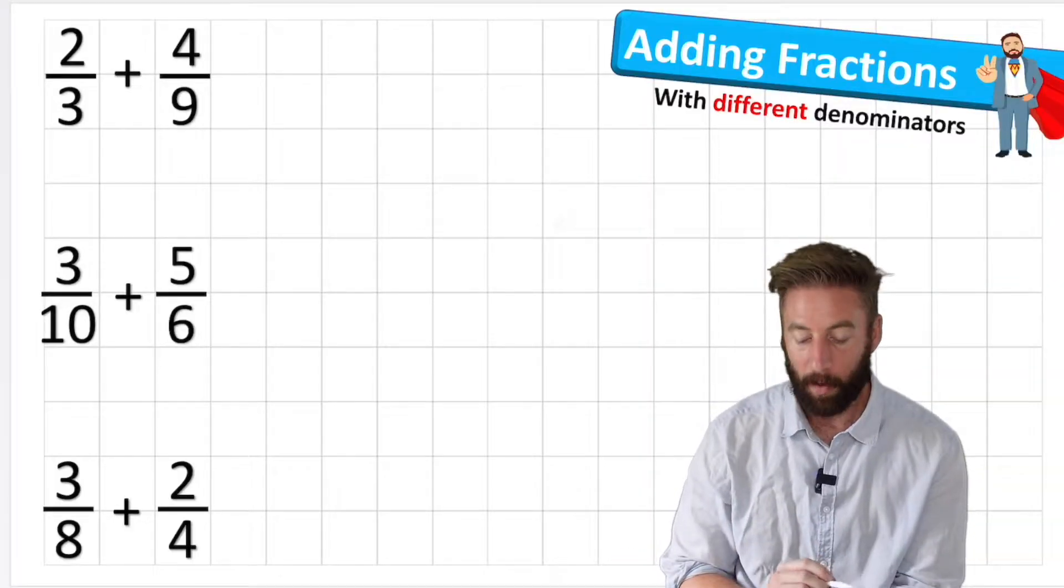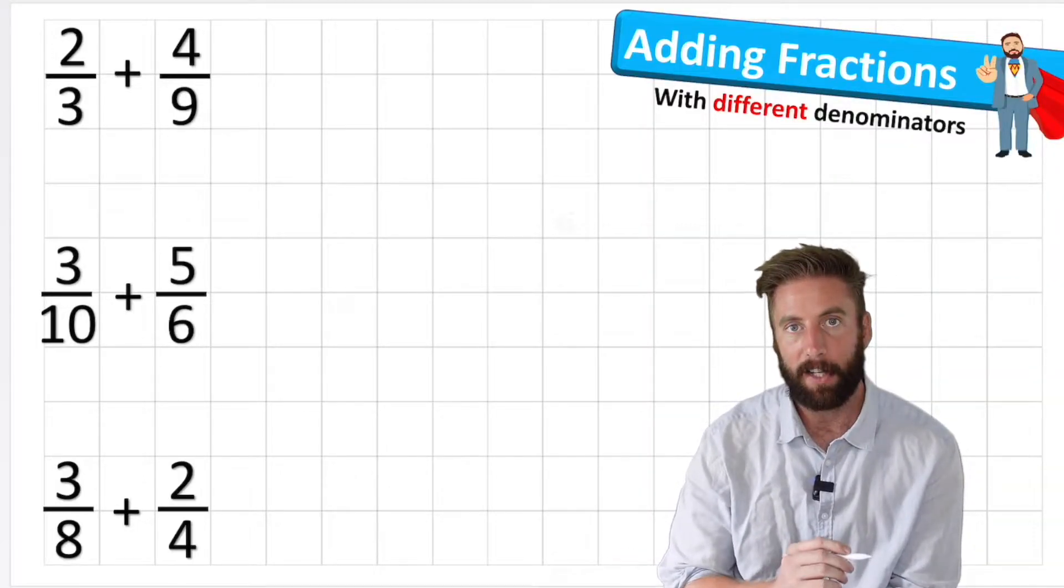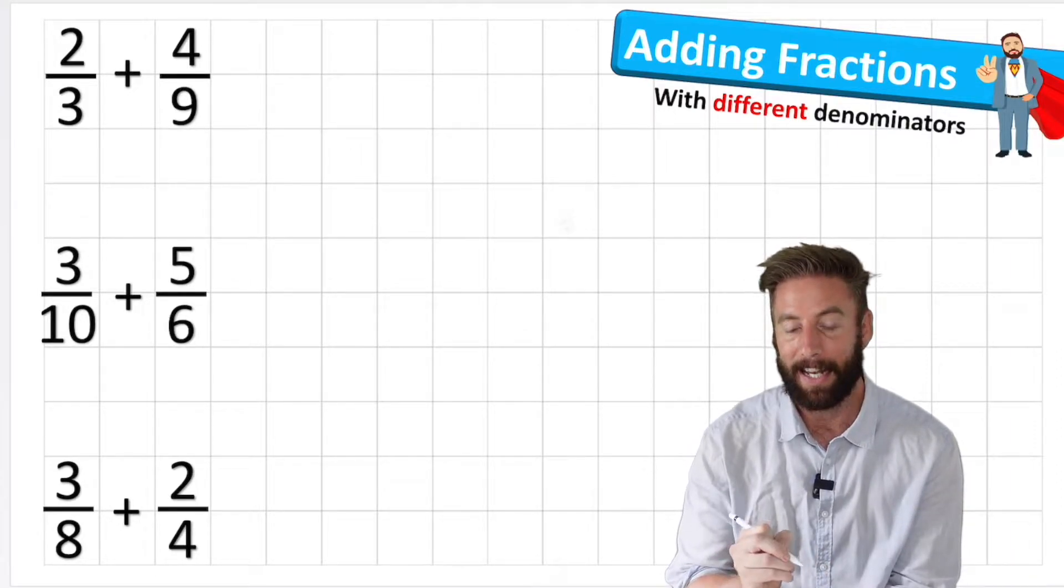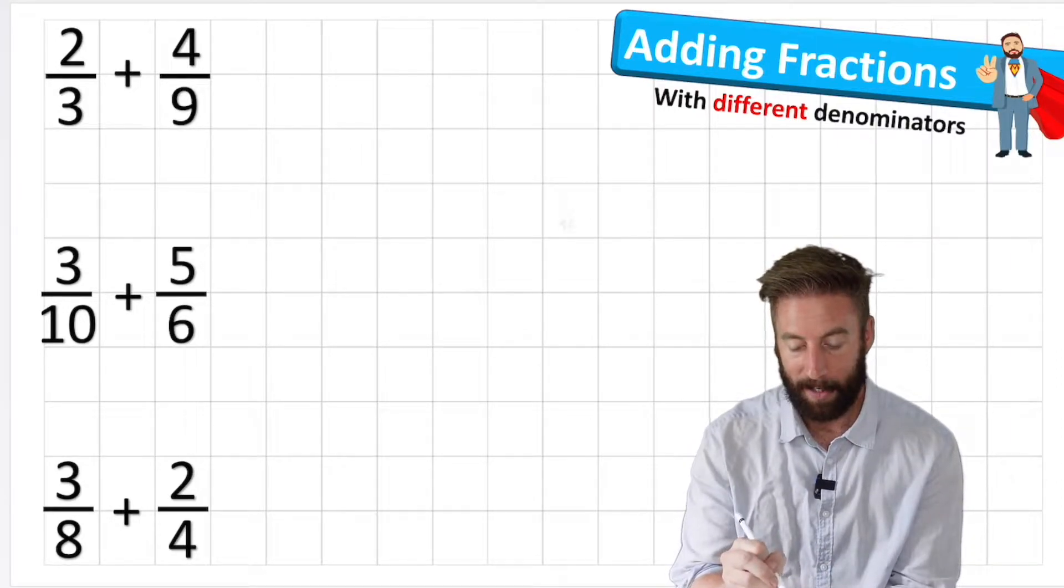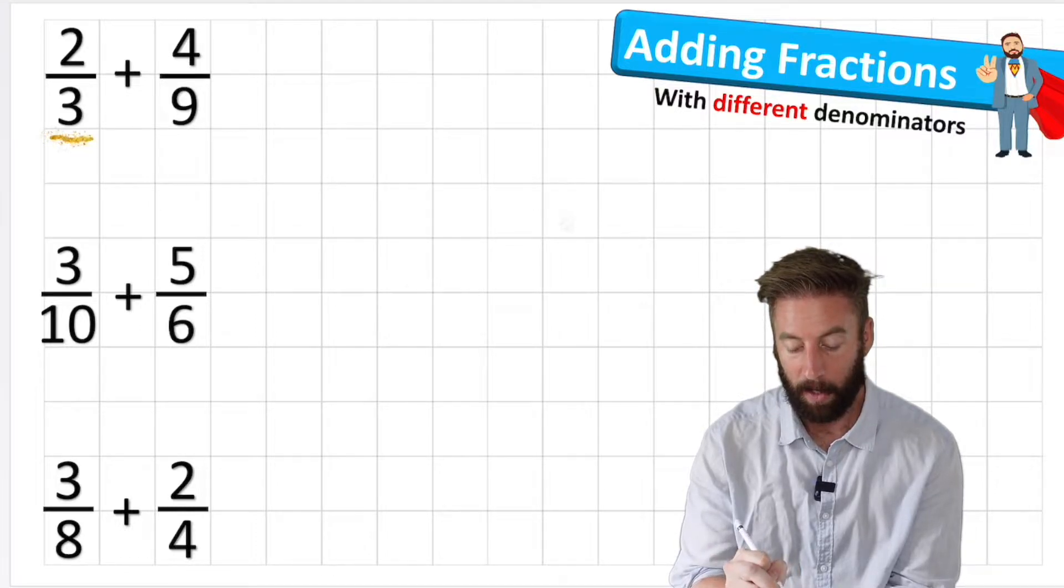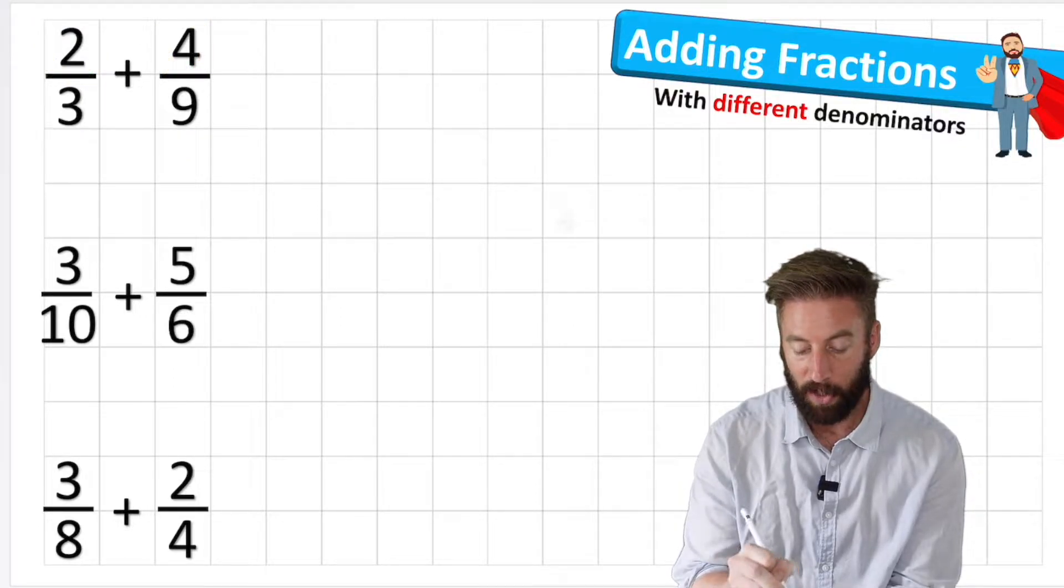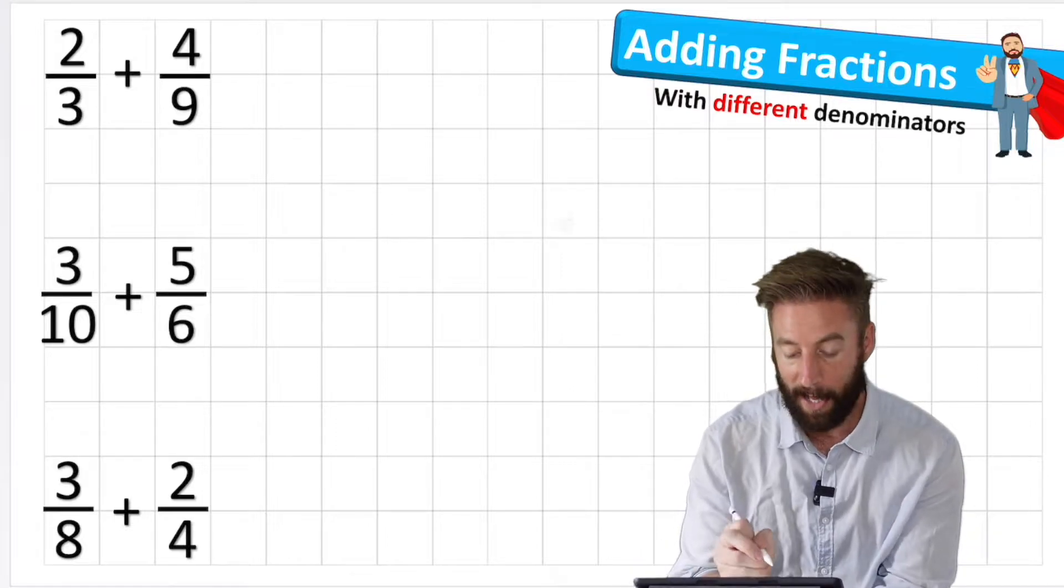Okay guys, so we're working with these three questions today and the first thing I can notice is that we now have different denominators in our question. So a denominator as we know is the number underneath the fraction, our numerator is the number on the top. As you can see in these questions I have different denominators that I'm trying to add.